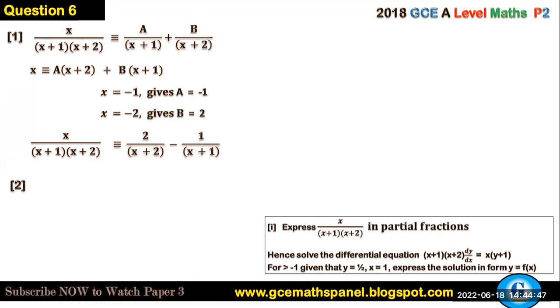Now part 2 says 'hence solve the differential equation.' Hence means we must use this solution in this second part of the equation. First of all, you have to arrange this differential equation such that we can separate the variables. If we multiply all through by dx, we will obtain (x+1)(x+2)dy = x(y+1)dx.